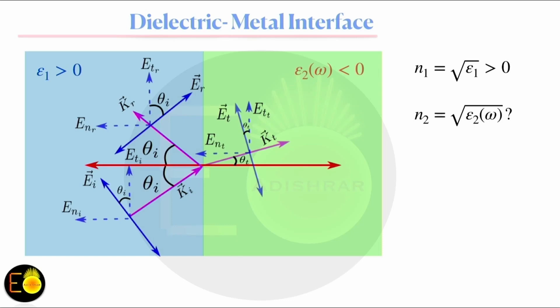We have seen that the dielectric material has a permittivity or dielectric constant greater than zero, resulting in a refractive index also greater than zero. On the other hand, the dielectric constant of a metal depends upon frequency, therefore the refractive index also depends upon frequency. That question can be answered if you know the frequency response of the permittivity of a metal — and that is the topic for today.